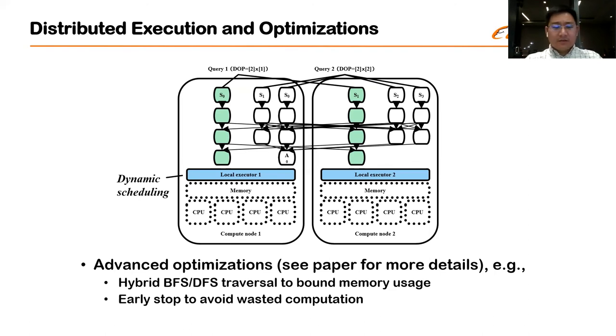And this further allows us to implement advanced optimizations. Again, due to time limit, we refer users to the paper for more detail. I'll just give two examples of important optimizations for efficient traversal. One example is we implement a hybrid BFS-DFS traversal strategy to bound memory usage automatically. This is because different execution order, or the order of visiting vertices and edges in the graph, can impact the memory requirement for traversal significantly. The other important optimization we have implemented is early stop, which is used to avoid wasted computation given the presence of limit and conditionals that can be determined early without fully traversing the graph.